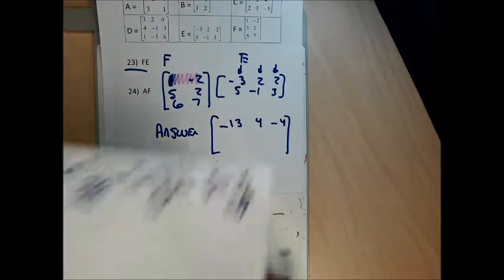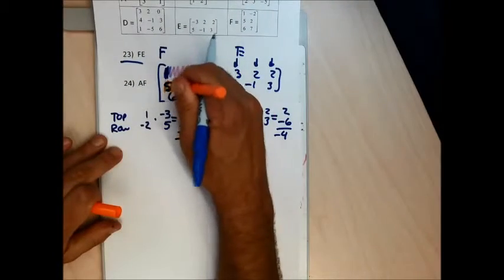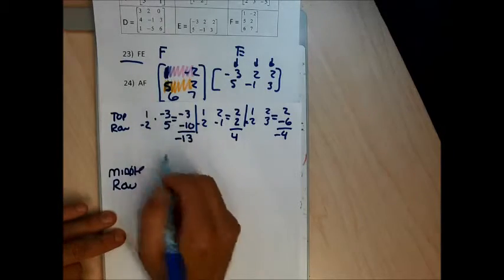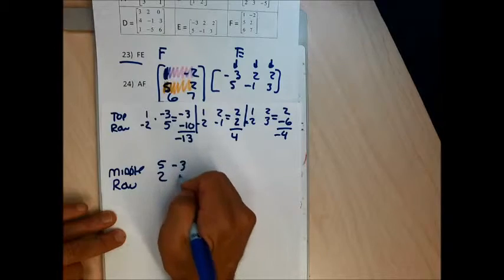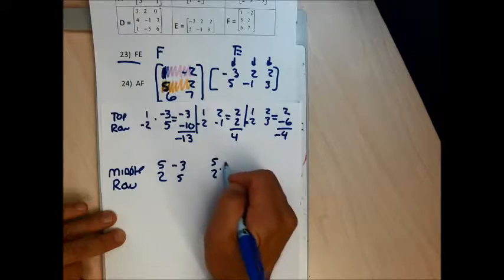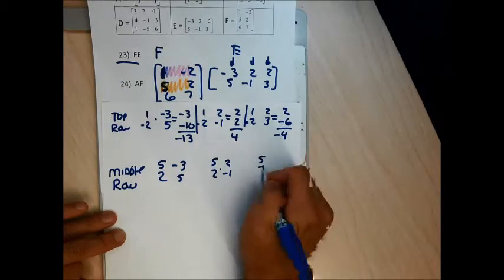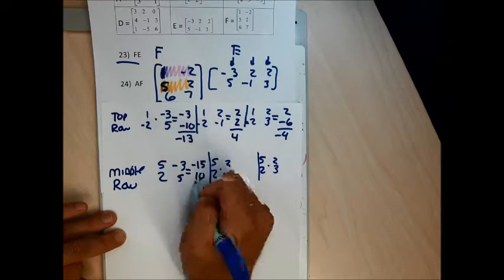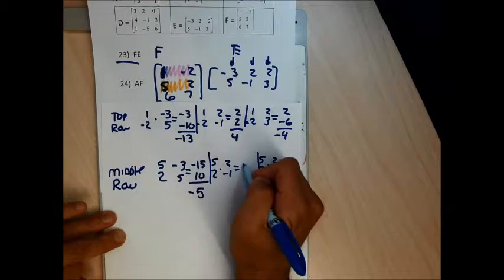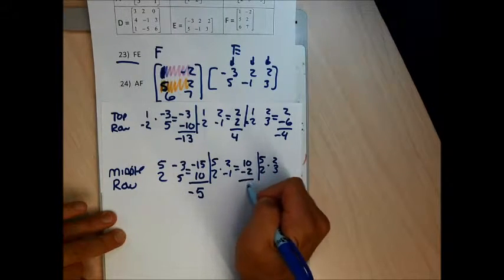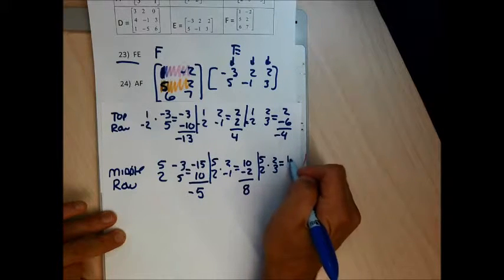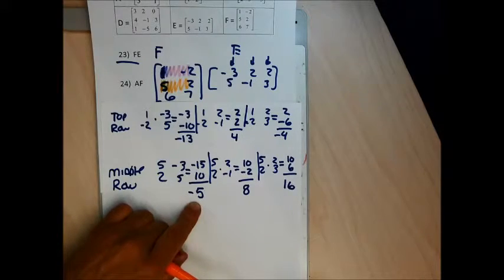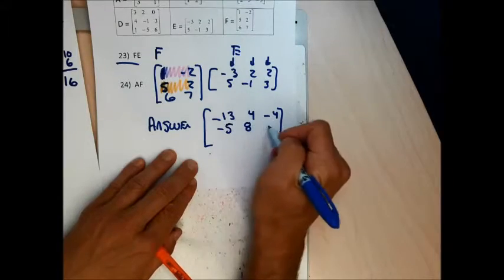Middle row of F (5, 2) gives the middle row of my answer. 5 times negative 3 plus 2 times 5 is negative 15 plus 10 — opposite signs, subtract — gives negative 5; 5 times 2 plus 2 times negative 1 is 10 minus 2 — opposite signs — gives 8; 5 times 2 plus 2 times 3 is 10 plus 6 — same signs — gives 16. Middle row: negative 5, 8, 16.